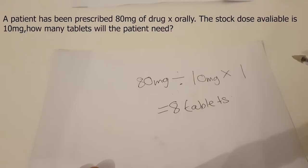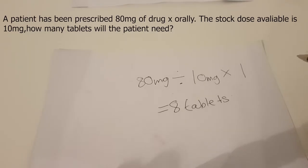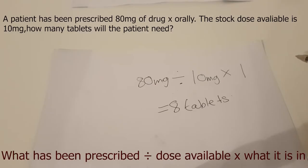The first question: a patient has been prescribed 80 milligrams of drug X orally. The stock dose available is 10 milligrams. How many tablets does he need? Automatically we know that the patient will need eight tablets. However, there is a formula that I use that will get me the correct answer every single time. The formula is: what has been prescribed divided by the dose available, multiplied by what it is in.